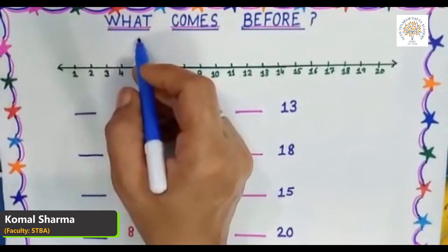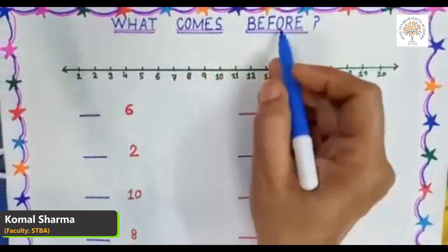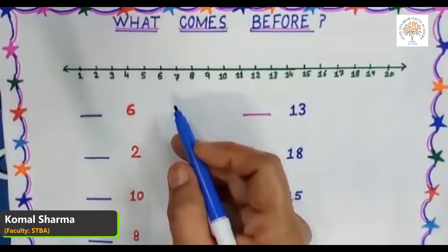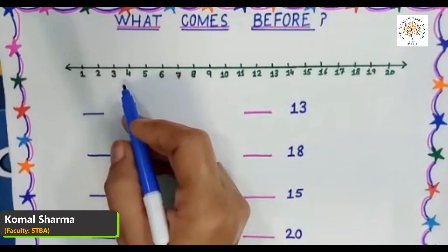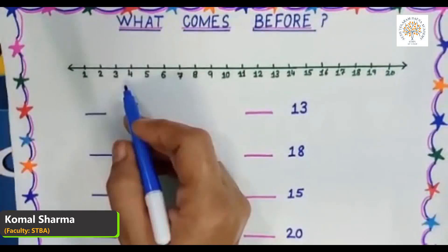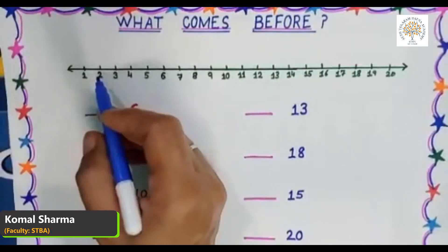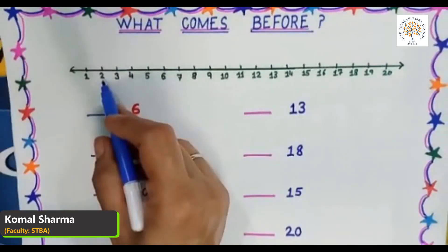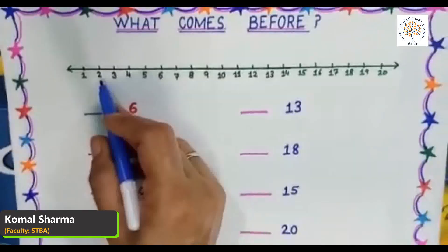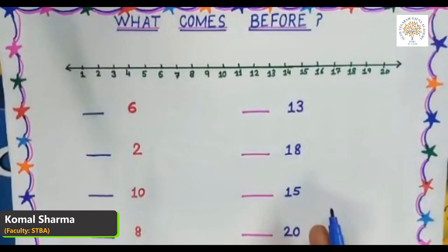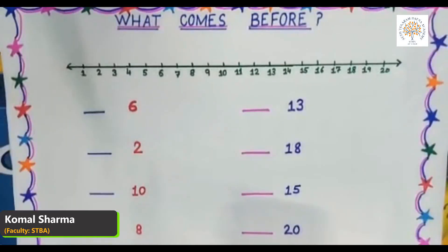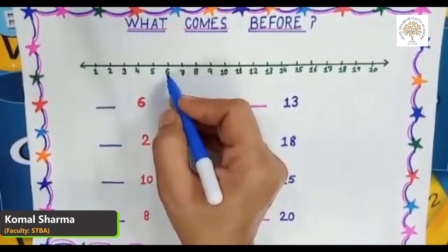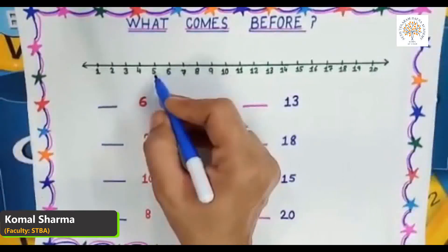Students, the topic we will learn today is 'what comes before.' The before number is one less, or one smaller than the given number. When we count in the backward direction, the earlier number of the given number is 'before.' Number two comes before number three. Here are some examples — which number comes before number six? Look at the number line — here is number six, and number five comes before it.